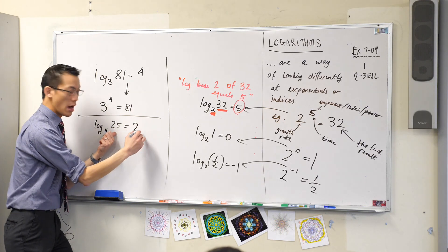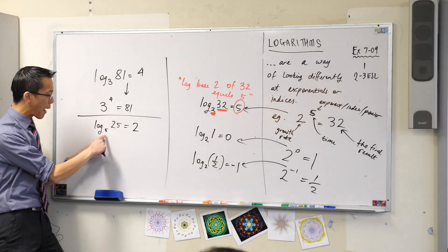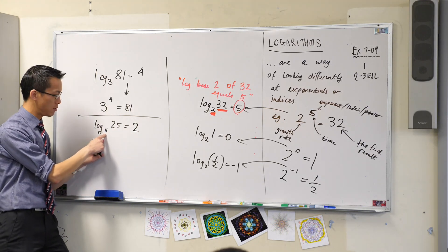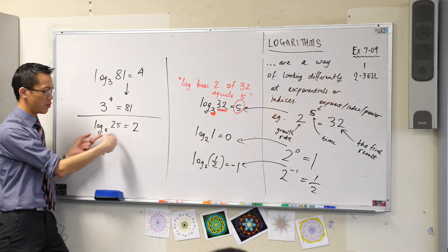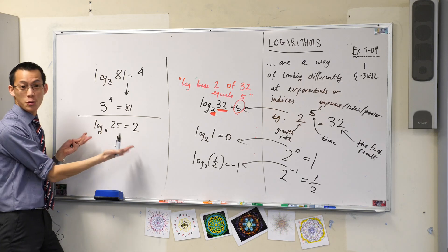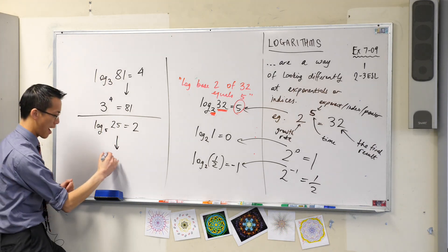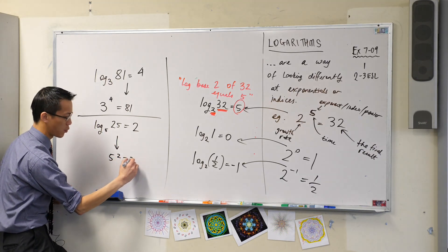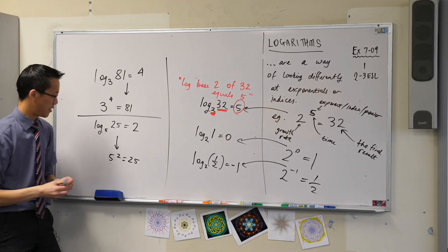Two. Another way of thinking about it is what power do I have to raise this to to get to that? And the answer is 5 squared. Which means what exponential equation would you write that goes with this guy? 5 squared is 25. Okay, that's not too complicated.